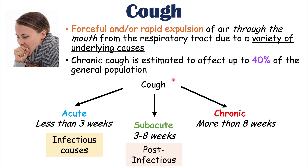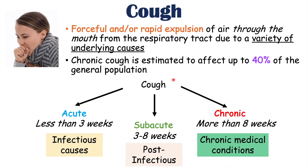In the subacute phase, the most common cause is a post-infectious cough, meaning the patient had a respiratory tract infection before, had upper or lower respiratory tract infection symptoms, those symptoms have resolved, but they still have a cough. However, one exception is that if a patient didn't have an infection but has had a cough for three to eight weeks, a clinician may consider this a chronic cough and begin a workup. For chronic cough, we'll talk about a variety of medical conditions and medications that can cause it.